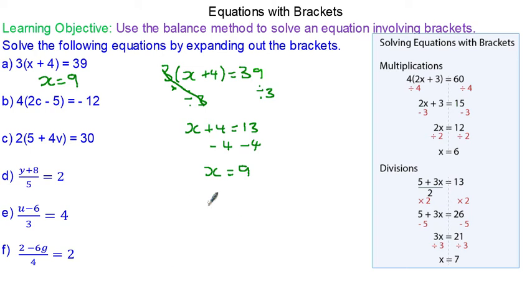And we can check it's right by putting the 9 back into the equation. So 3 lots of 9 plus 4. 3 times 13 does make 39.